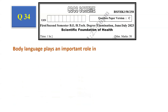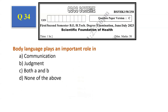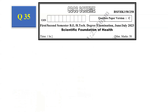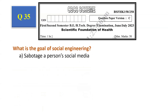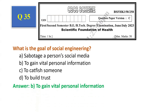Question number 34: Body language plays an important role in — communication, judgment, both A and B, none of the above. The answer is both A and B, that is option C. Question number 35: What is the goal of social engineering? Sabotage a person's social media, to gain vital personal information, to catch someone, to build trust. The answer is to gain vital personal information, that is option B.